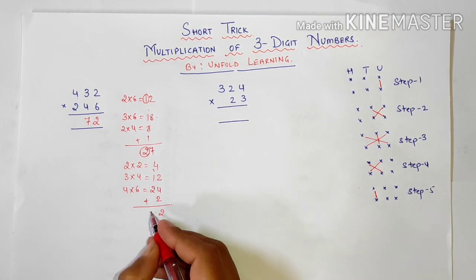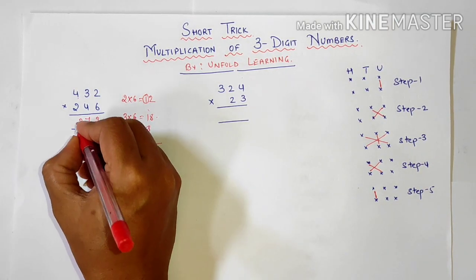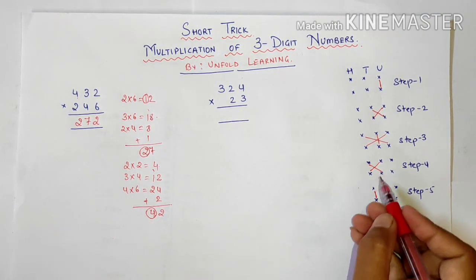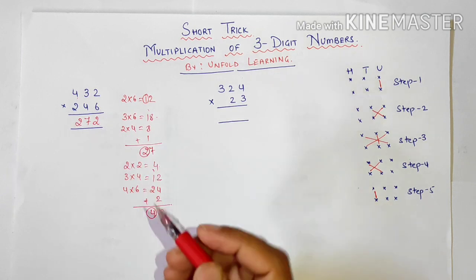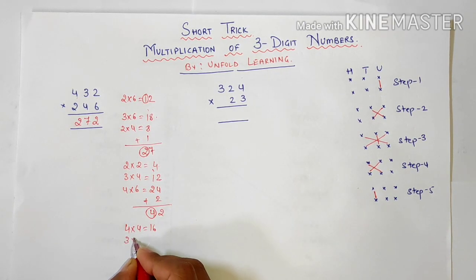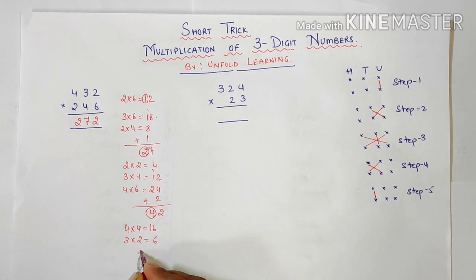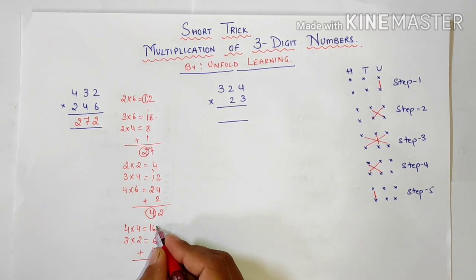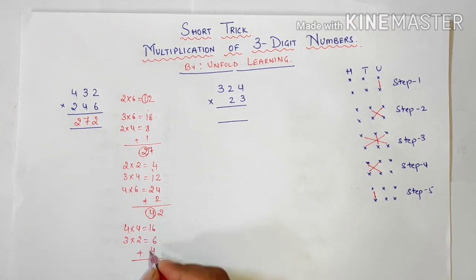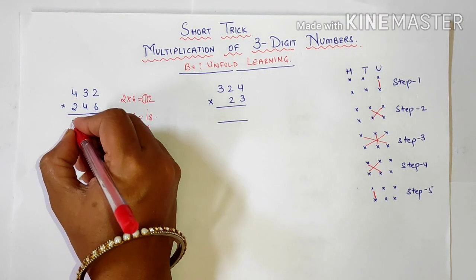2, 3, 4. So I will write here 2 and carry over. Next step is multiplication of hundreds to tens digits. So 4 into 4 is 16. 3 into 2 is 6. Plus carry over 4. 6 plus 6 is 12. Plus 4 is 16. 6, 1 carry over 2. I will be writing 6 here.